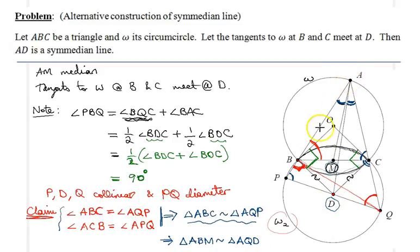So in a sense that half triangle ABM must be congruent, sorry, similar to the half triangle AQD in a sense. And as a result, so this beautifully proves that those two angles, so therefore those two angles, BAM is equal to QAD.